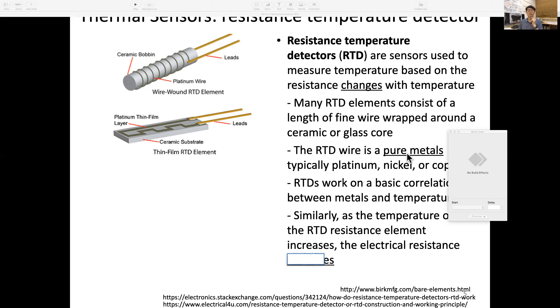RTD wires are usually pure metals, typically platinum, nickel, or copper. This resistance temperature detector works on a basic correlation between these metals and temperature. It looks almost like this: ceramic with a thin film.